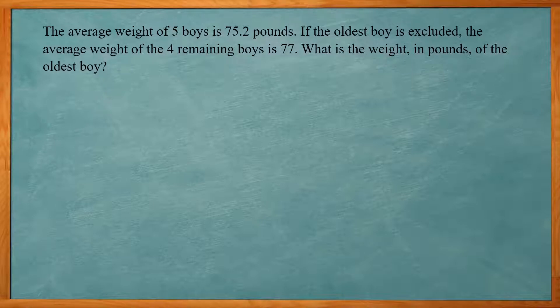So here it says the average weight of five boys is 75.2 pounds. If the oldest boy is excluded, the average weight of the four remaining boys is 77. What is the weight in pounds of the oldest boy? So again, we want to use our formula, the summation of the x values divided by n.